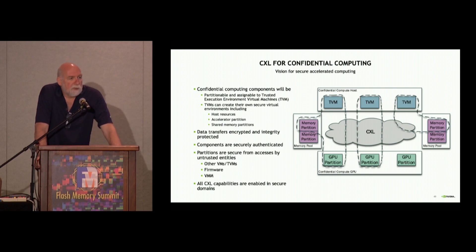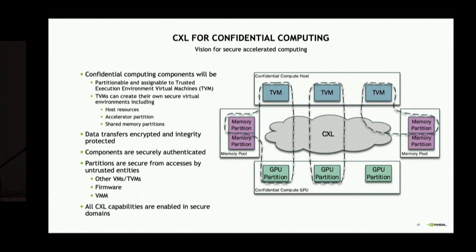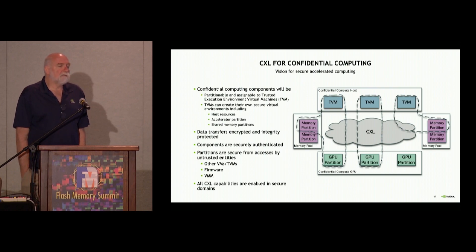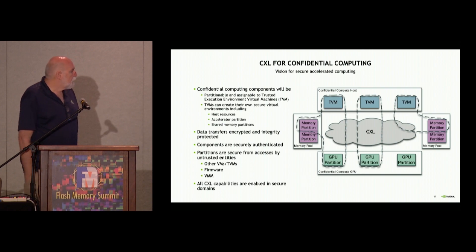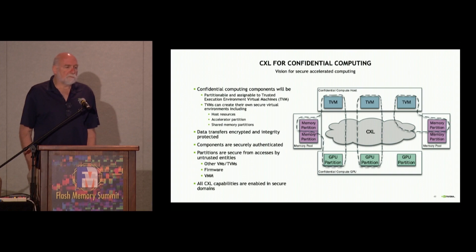Lastly, one of the things evolving in the industry is confidential computing — the ability to have a trust-nothing kind of environment. A vendor like Amazon or Google offering a cloud service could provide a trusted virtual machine running partly in the host, partly in the GPU, and partly in the CXL memory, where you don't have to trust any other TVM, the hypervisor, or the firmware — you may not even have to trust the switch. We think that's a key requirement for moving forward, because large deployments need security and isolation between virtual machines.